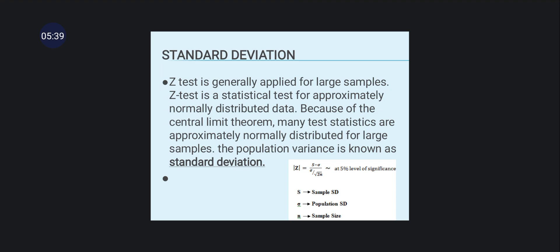The Z-test for standard deviation is generally applied for large samples. It is a statistical test for approximately normally distributed data because of the Central Limit Theorem. The formula is: |Z| = (S − σ) / (σ / √(2N)), where S is the sample standard deviation, σ is the population standard deviation, and N is the sample size. This is evaluated at the 5% level of significance.